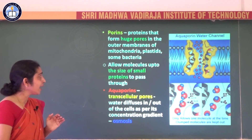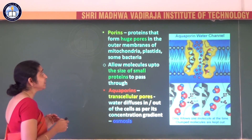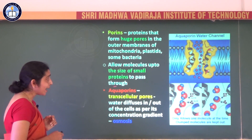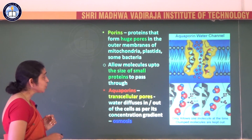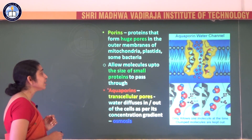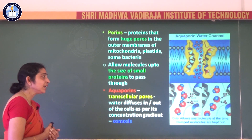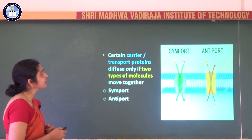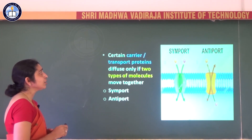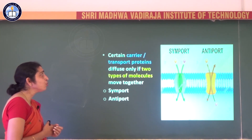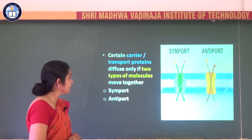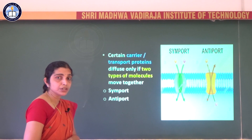Another important term is aquaporins. While porins form large pores, aquaporins are transcellular pores that help in the diffusion of water in and out of the cell as per the concentration gradient — basically by osmosis.